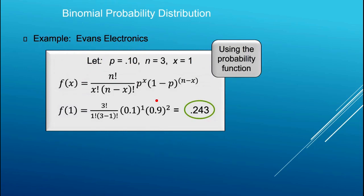Let's use this formula to recalculate the Evans Electronics probability. n = 3 employees picked at random, and we want x = 1 success. This gives us 3-choose-1, times 0.1^1, times 0.9^2. The number of ways to place one success in three slots is 3, and putting it all into a calculator or Excel gives us 0.243, or 24.3% — exactly what we calculated before.